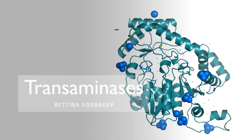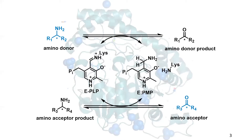Transaminases, also called aminotransferases, generally catalyze the reversible transfer of an amino group between two compounds: an amino donor that is an amino acid or an amine that has no carboxylate group at all, and an amine acceptor that is a ketone, an aldehyde, or a ketoacid, for example. In the middle, there is the essential mediator PLP, which is pyridoxal 5-phosphate.